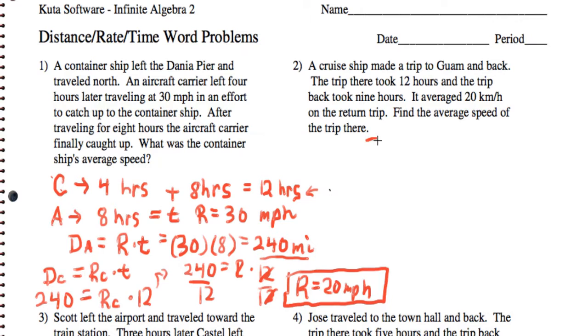So we know the distance back equals the rate back times the time back. So the distance back equals the rate, which is 20 kilometers per hour, times the 9 hours it took to go back. So that's 180 kilometers.